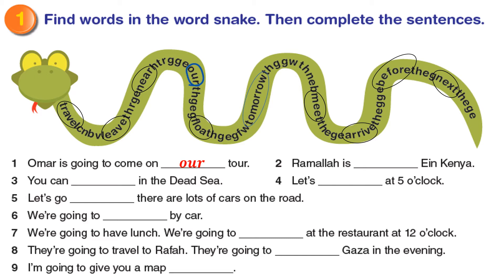Now check your answers with me. Number 2: Ramallah is near. Number 3: You can float in the Dead Sea. Number 4: Let's meet at 5 o'clock. Number 5: There are lots of cars on the road — let's go before.